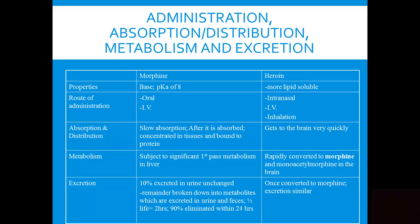What happens is this very lipid-soluble substance gets delivered to the brain, but then it's immediately converted into morphine. Because it's so lipid soluble, all of it gets to the brain. So it's much more powerful than just consuming morphine by itself, because you're delivering more morphine to the brain in this lipid-soluble package. The heroin molecule itself is inactive at receptor sites — it's the morphine delivered in that package that produces the effects.